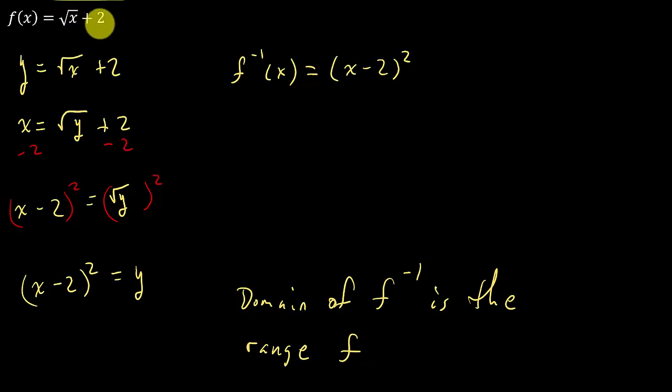Alright? So what's the range of this function? Well, let's look at it. Well, anytime you take the square root of a number, you're going to get zero or a positive number. And that zero or positive number, whichever you're getting, you're adding two to it.